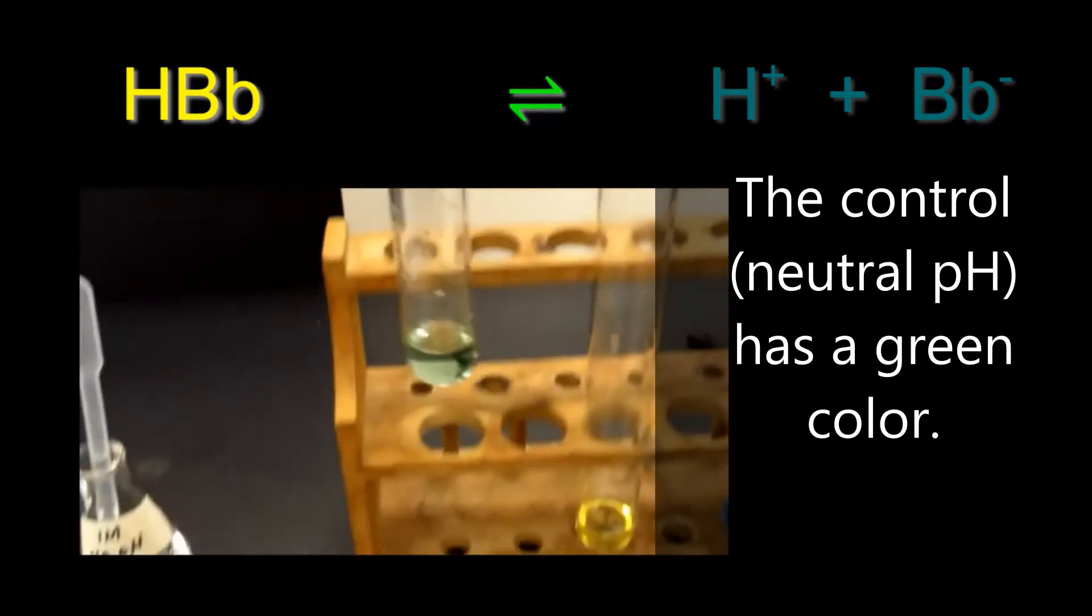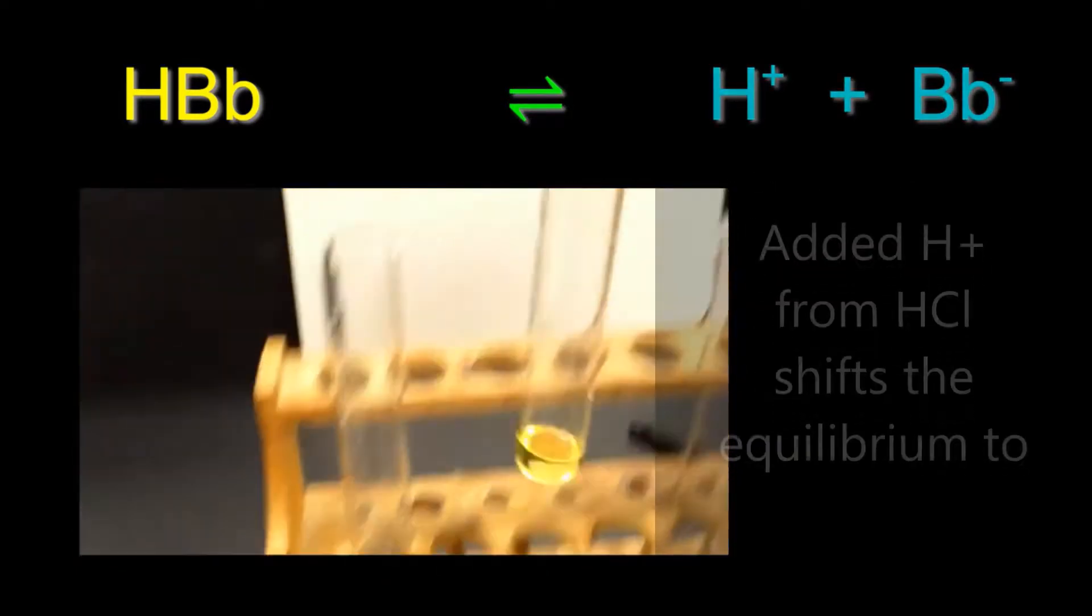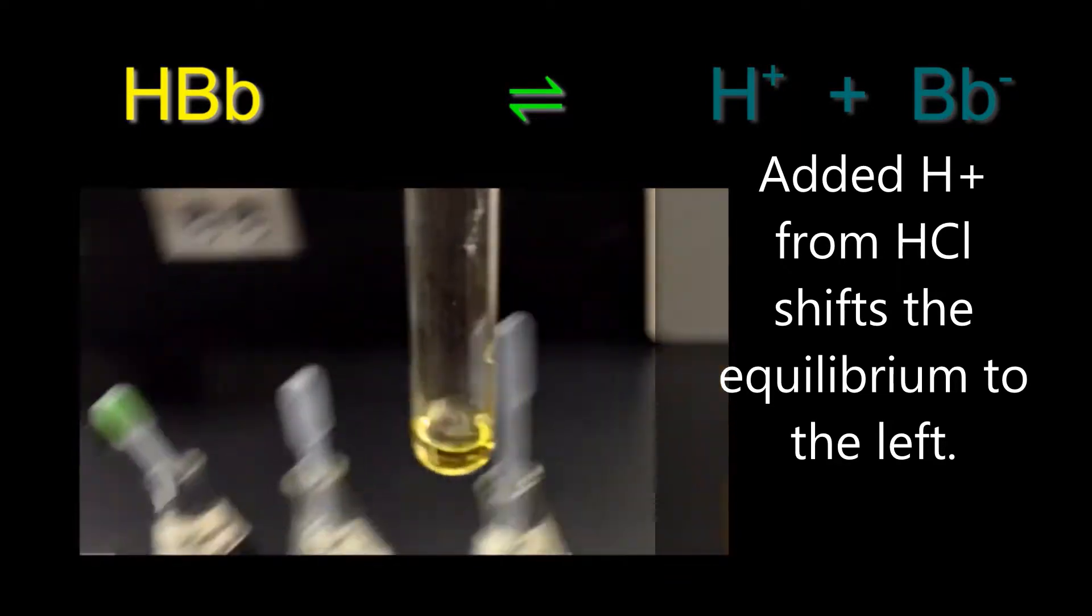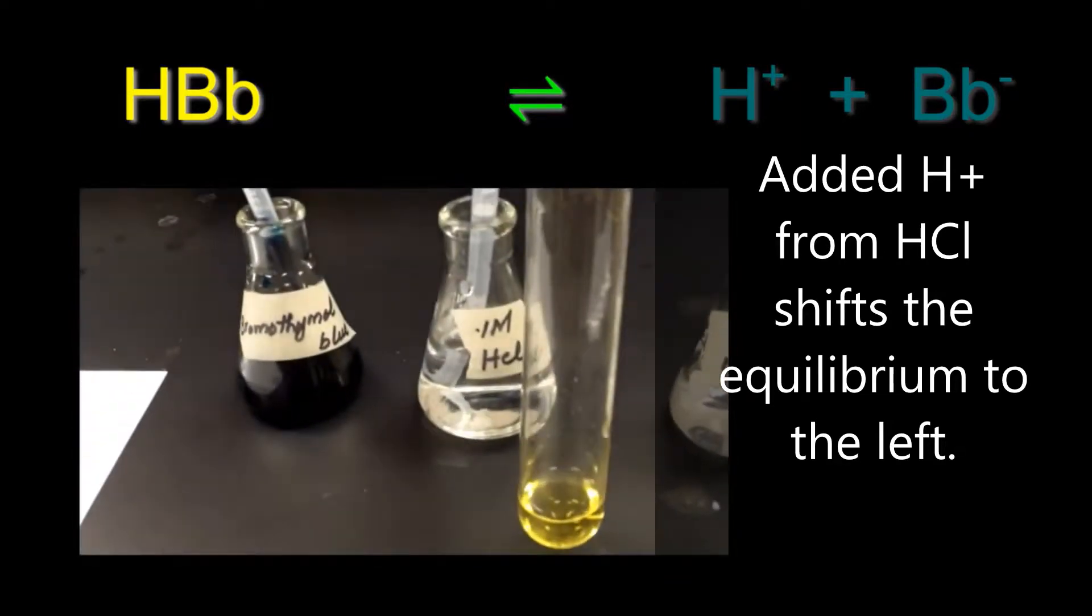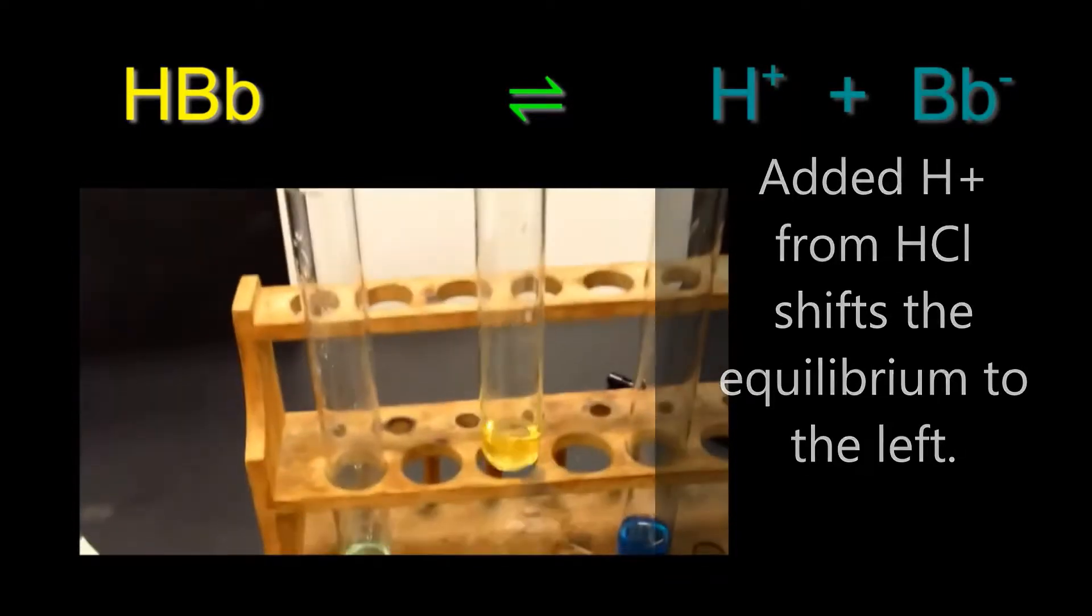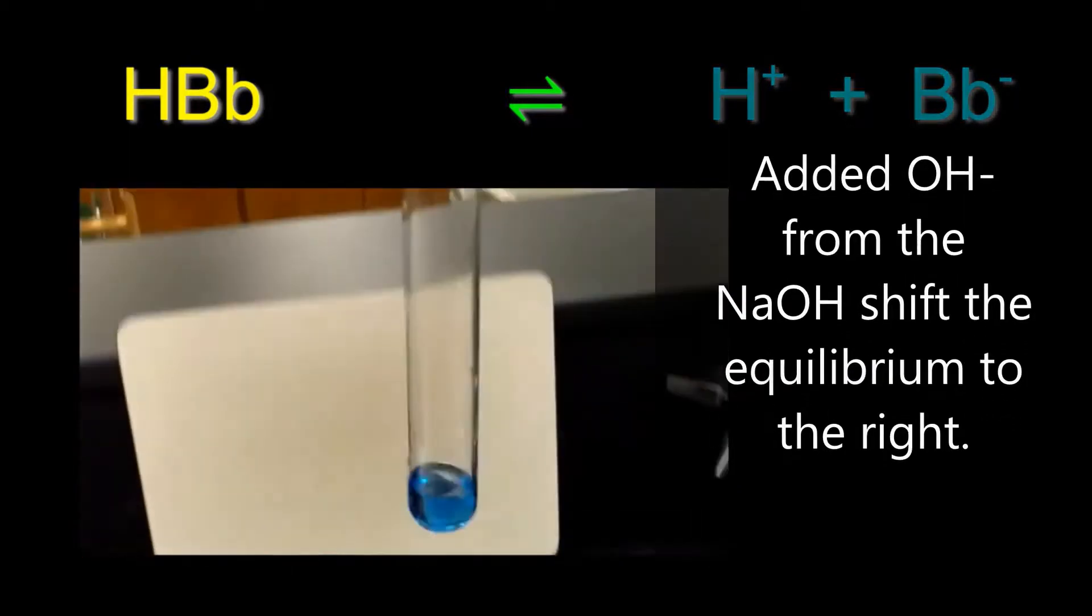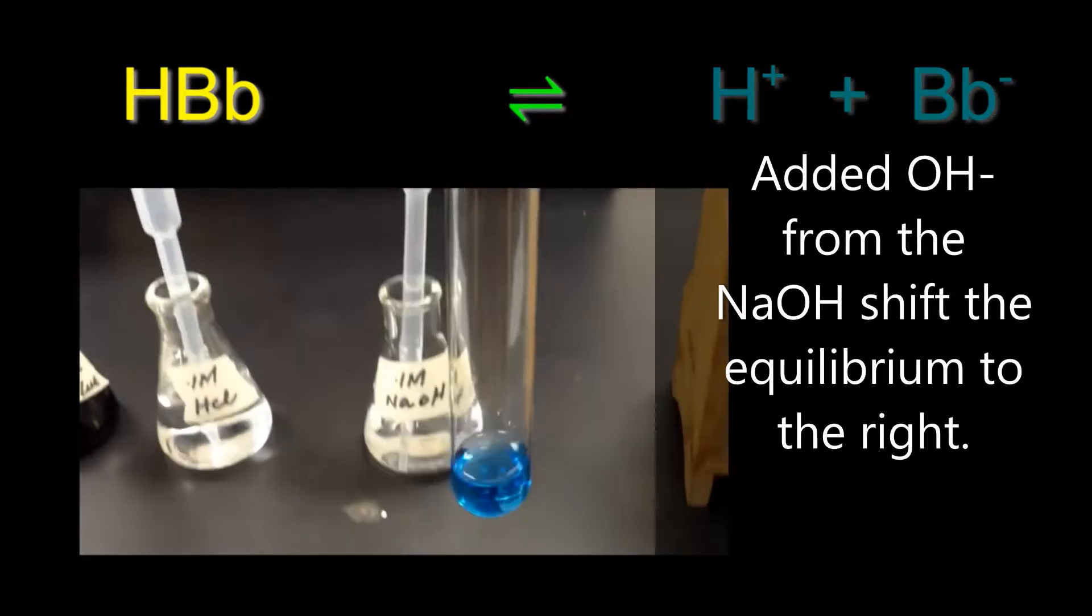The control test tube that has only water has a neutral pH and a green color. The second tube has turned yellow because the equilibrium was shifted to the left by the addition of the hydrochloric acid. The third test tube has turned blue because the addition of the hydroxide ion shifts the equilibrium to the right.